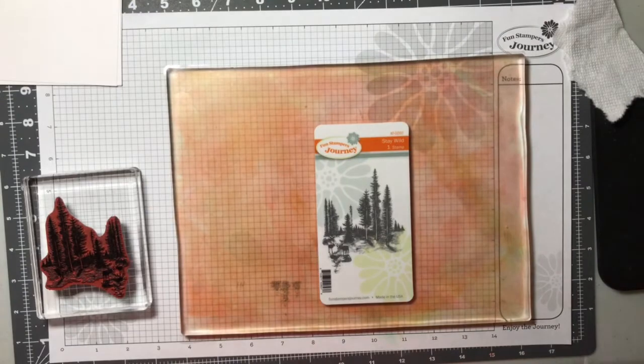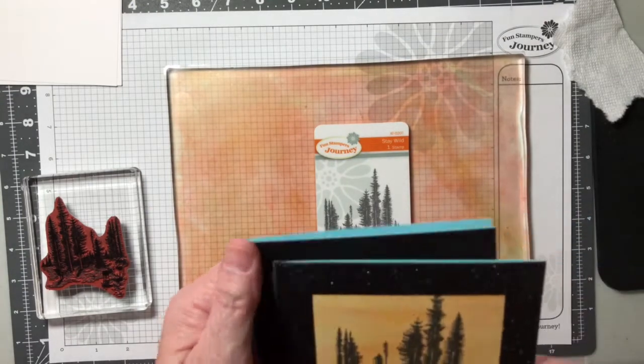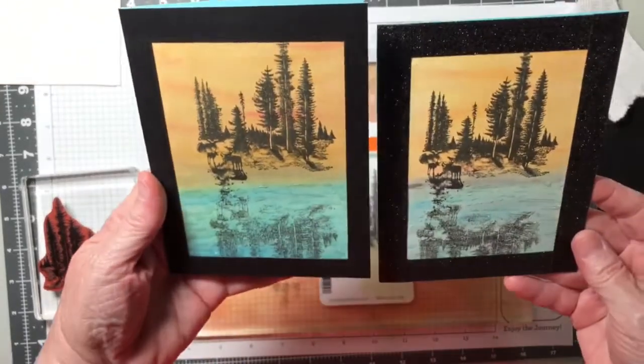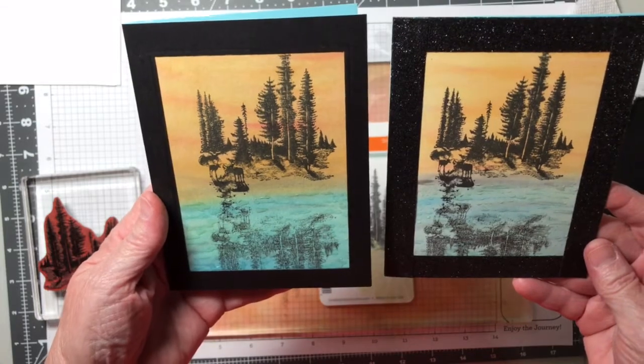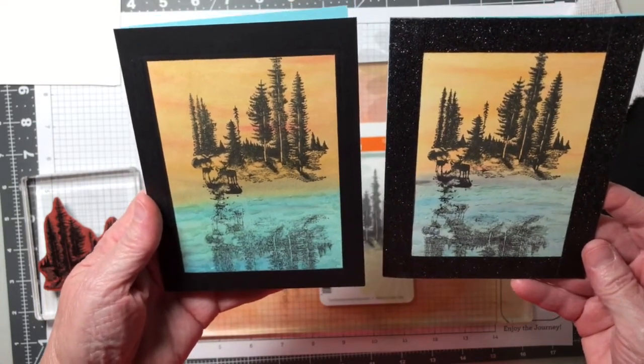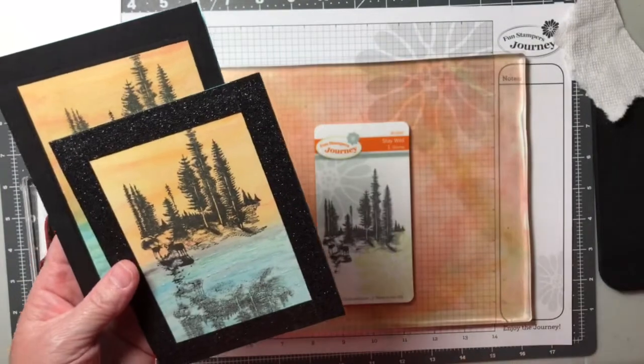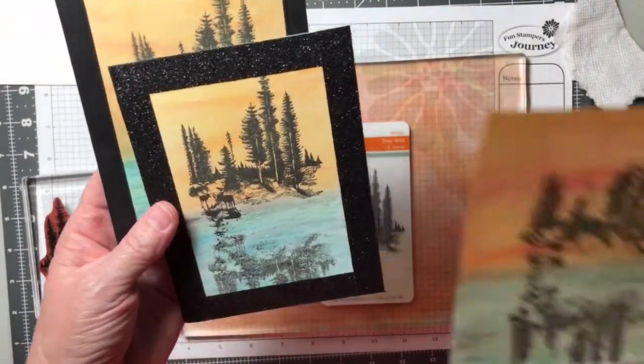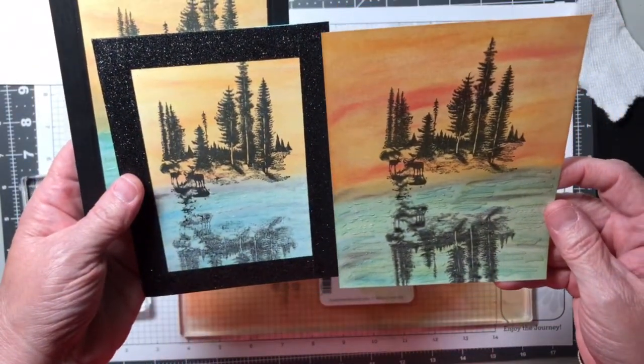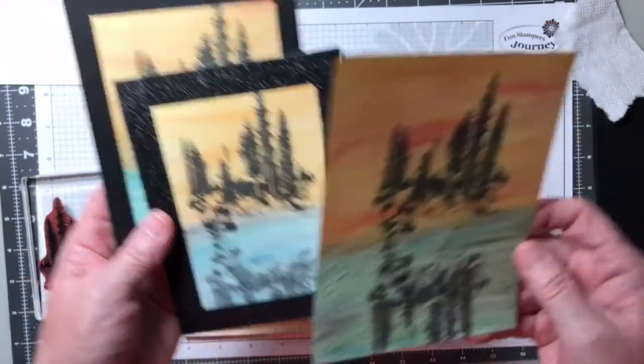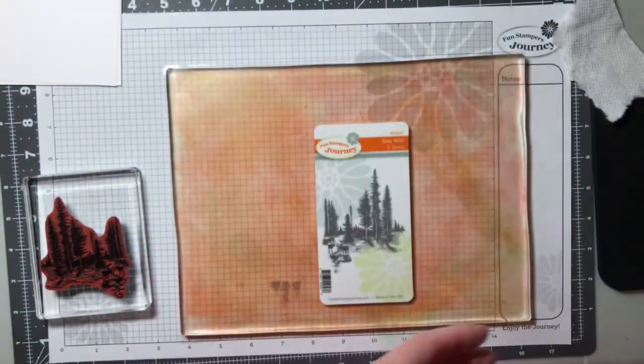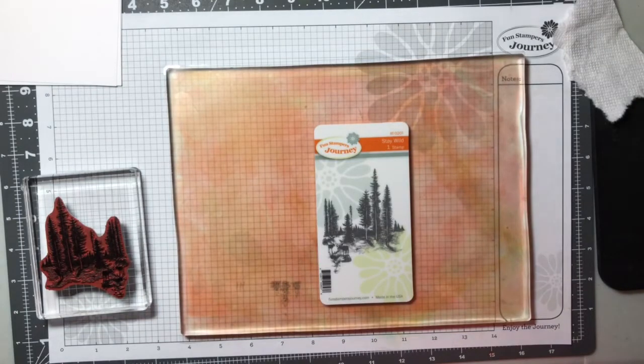So today I'm going to do another way, another technique to show you how to create mirrored images. The video I did yesterday used an acetate sheet. And this one I'm actually going to use our gel press. And here's a sample of the gel press one. And as you can see, the designs are very similar. You may find the gel press one a little easier to do. It's totally up to you, but I want to show you some different options.